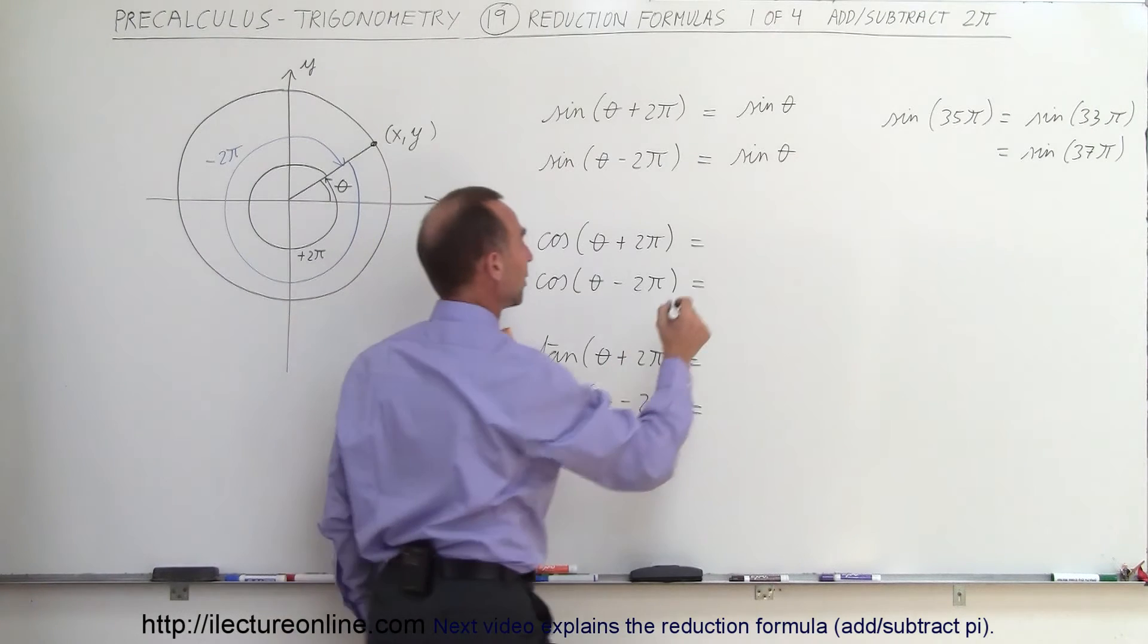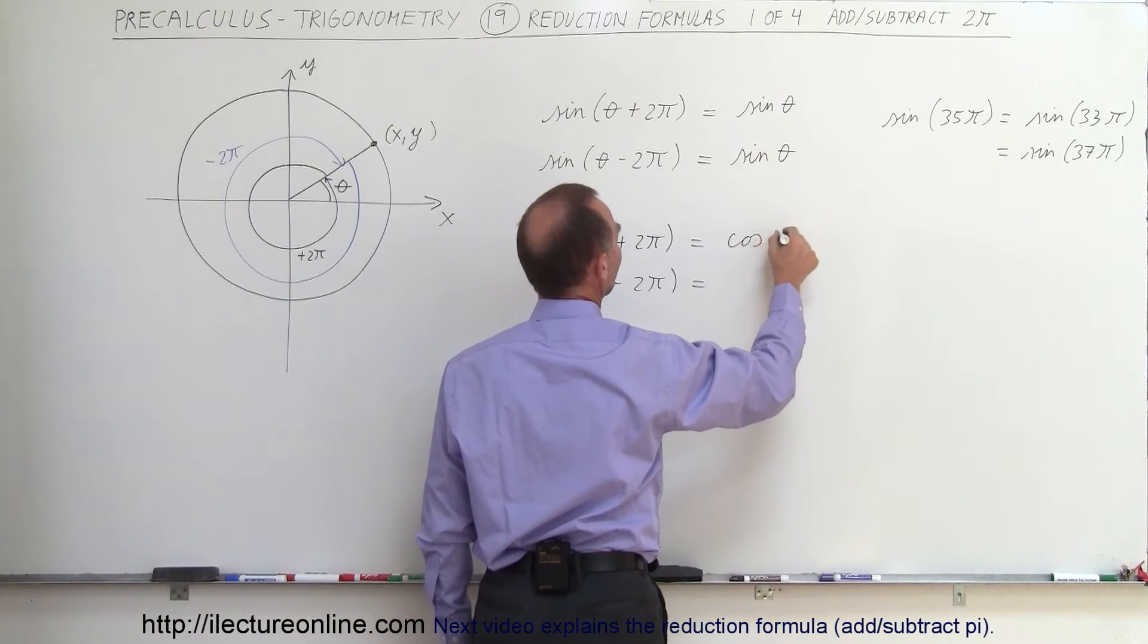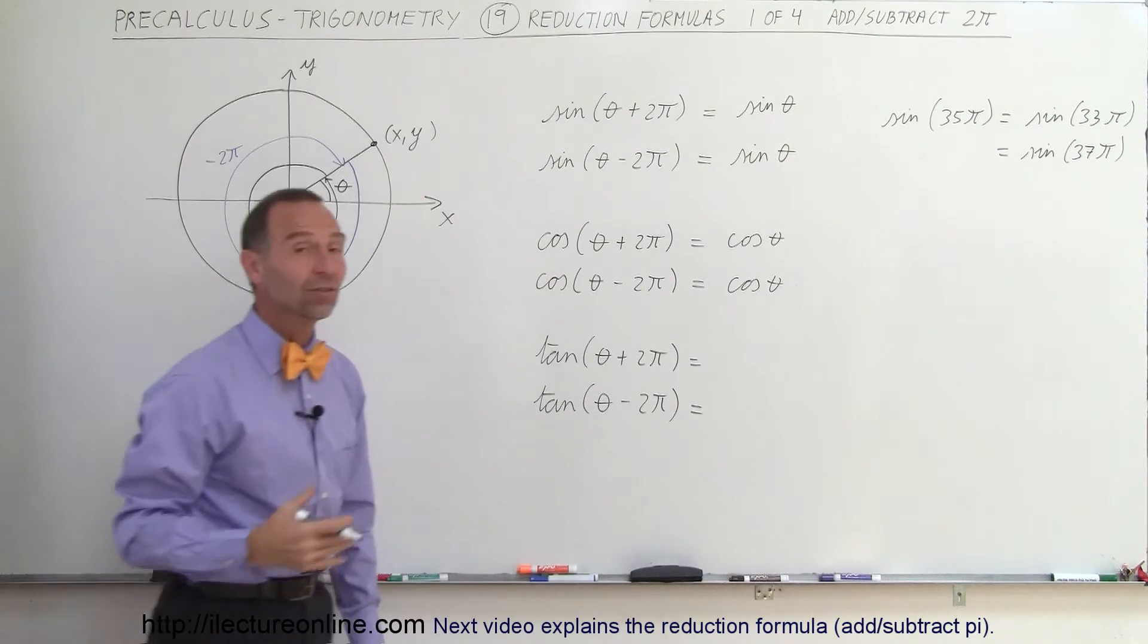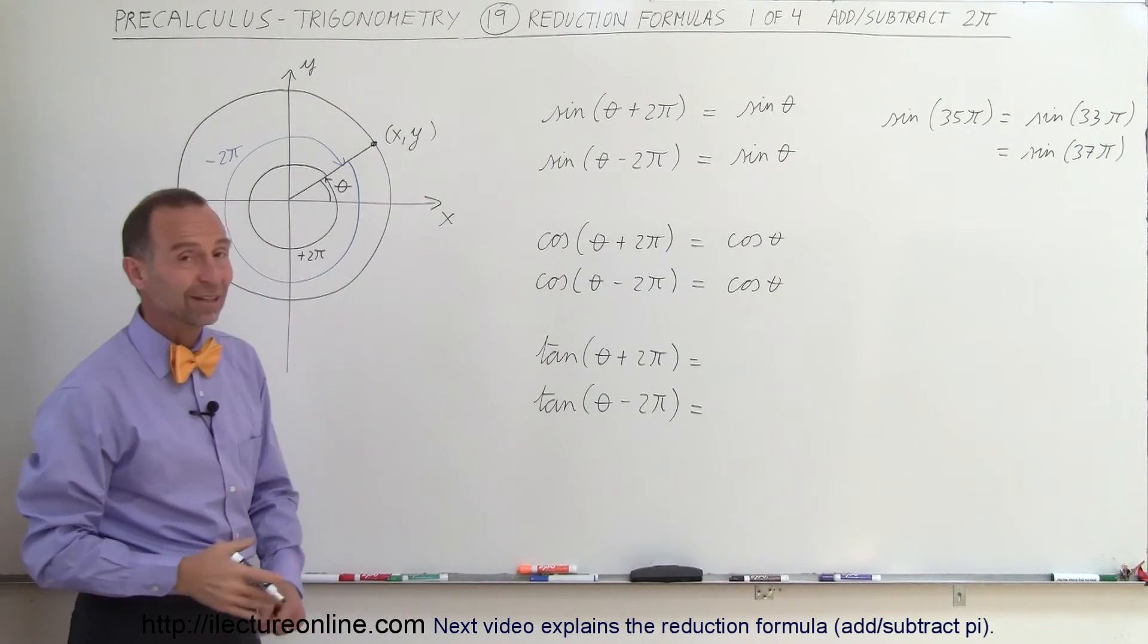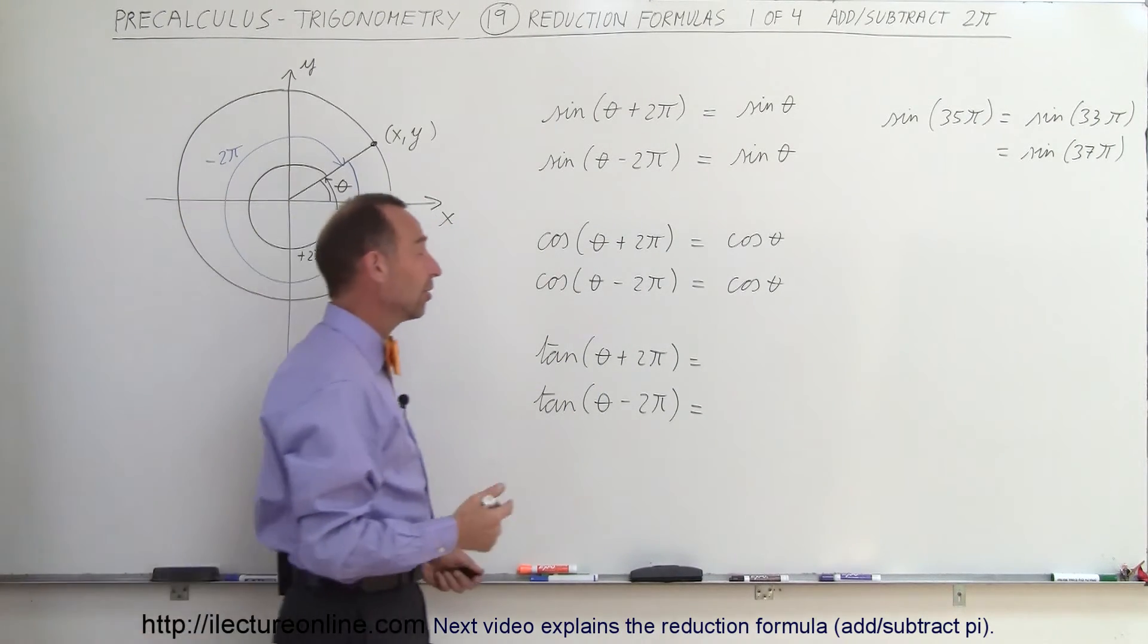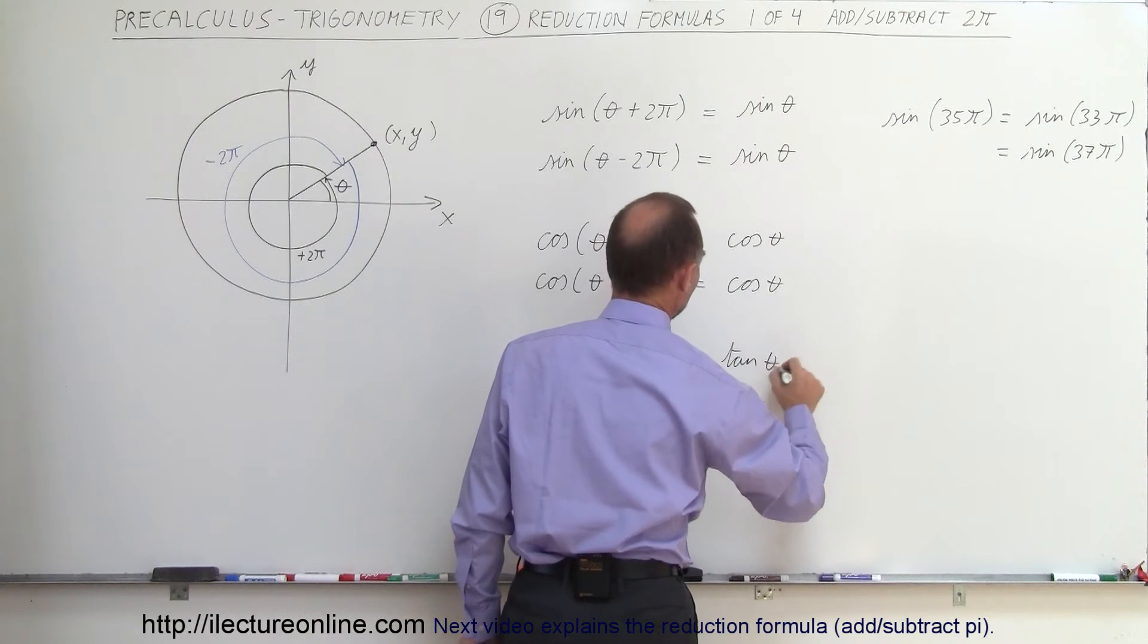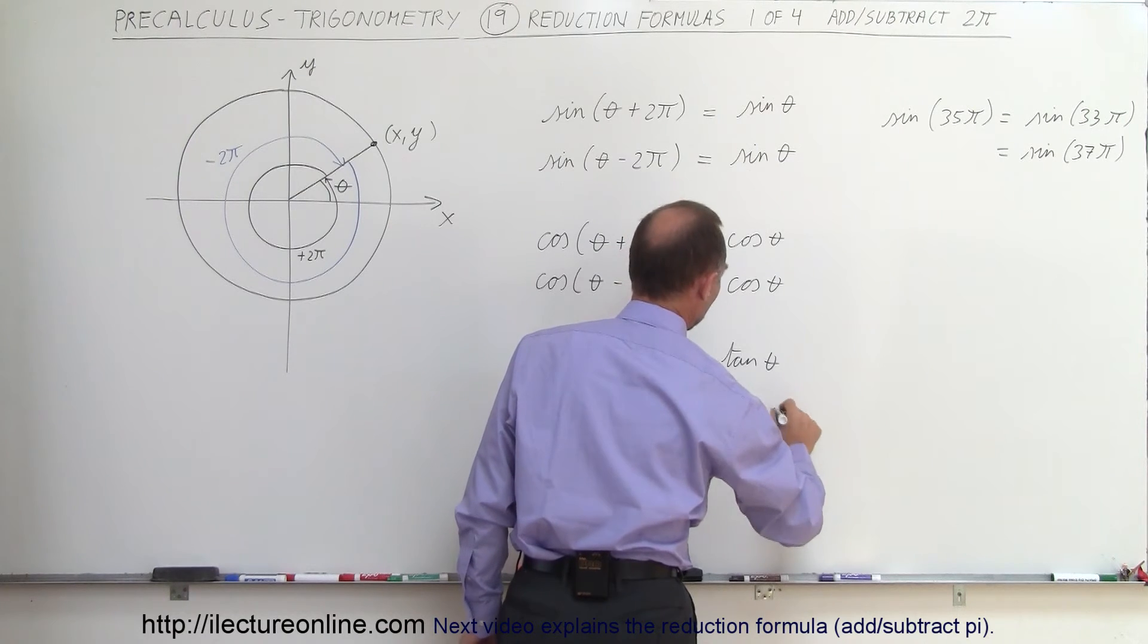The same for the cosine—makes no difference. This is equal to the cosine of theta. And since the tangent is the sine divided by the cosine, if the sine and the cosine don't change, the tangent doesn't change as well. Therefore, I can write this as the tangent of theta.